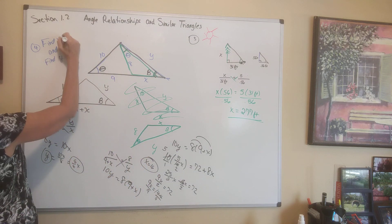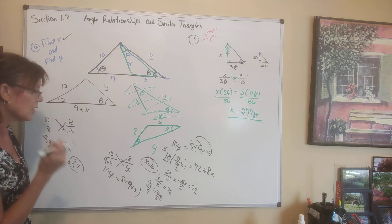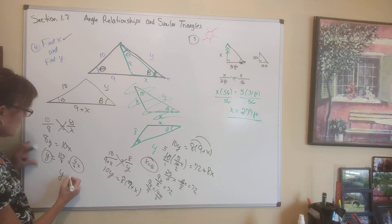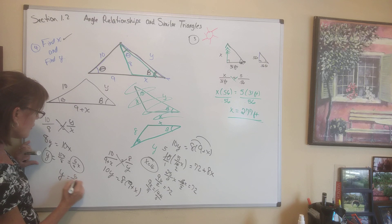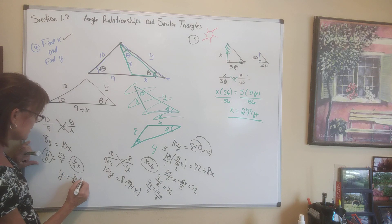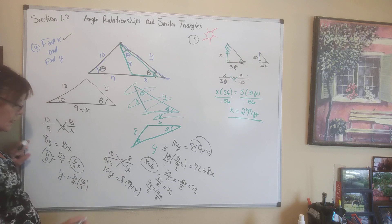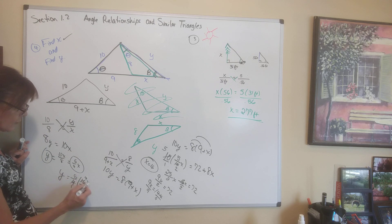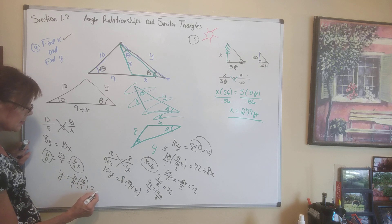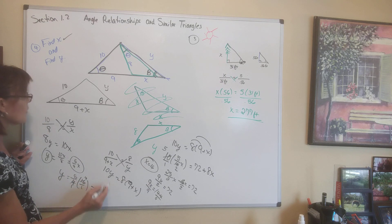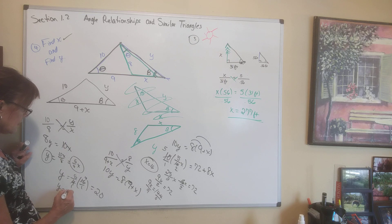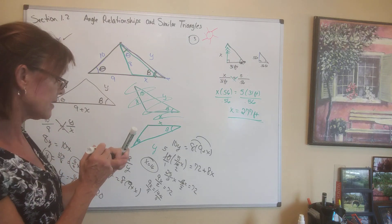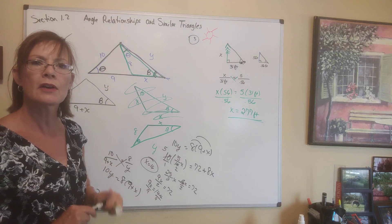X equals 16. To find Y, substitute back: Y equals 5/4 times 16. Since 4 goes into 16 four times, this gives Y equals 5 times 4, which is 20. Y equals 20. There's a homework problem that is similarly involved, so I wanted to make sure you saw how to do this.